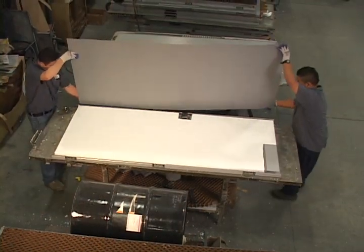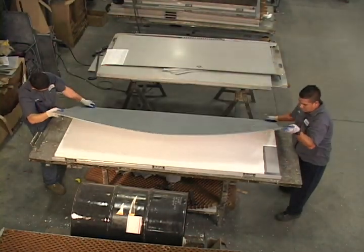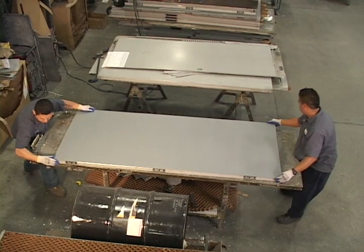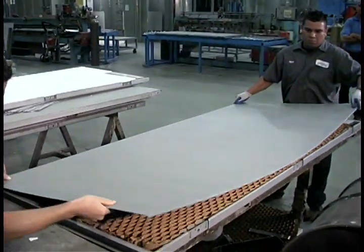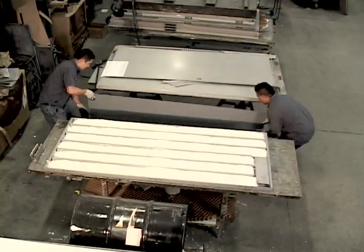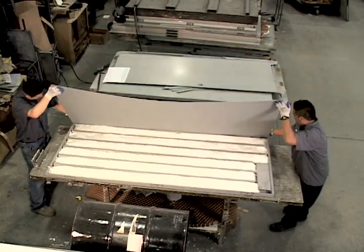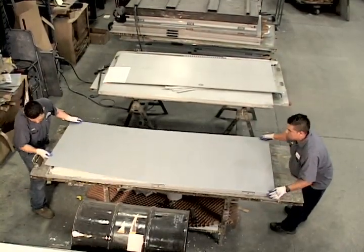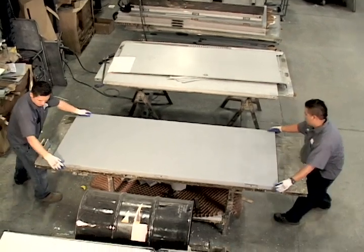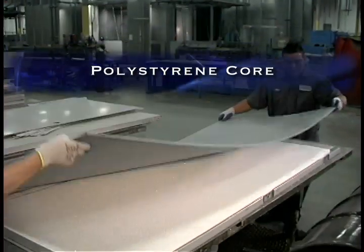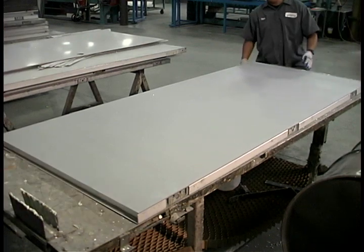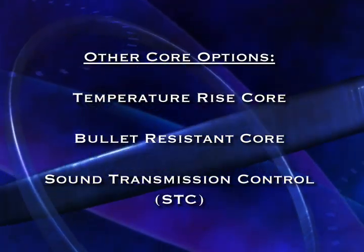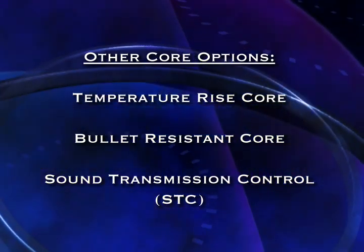Now that the door has been formed and the hardware reinforcements installed, it's time to insert the core. We offer many types of door cores. The three most frequently ordered are honeycomb, steel stiffened, and polystyrene. The honeycomb core is the standard for the hollow metal door industry and is extremely durable. The steel stiffened core is often selected for additional strength; stiffeners are typically 18 or 20 gauge, though we also offer 16, 14, 12, and 10 gauge stiffeners. The polystyrene core is also very durable and is often used where thermal barrier characteristics are required. Other core options include temperature rise, bullet resistant, and sound transmission control or STC doors.